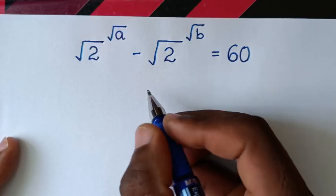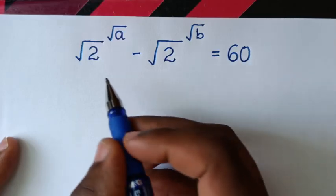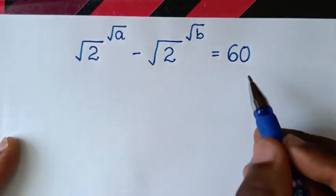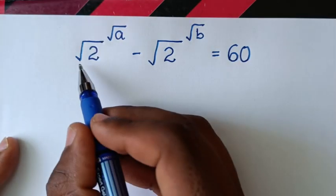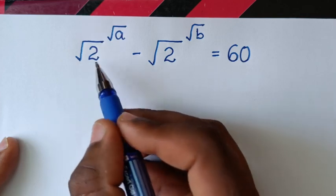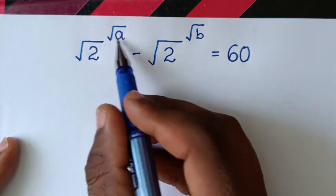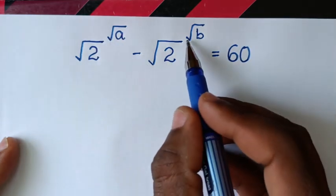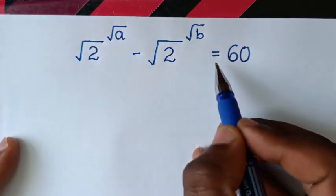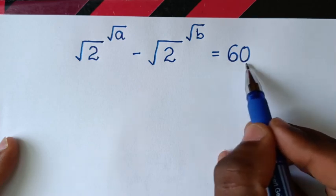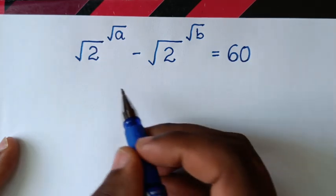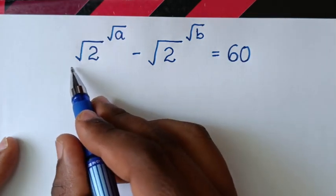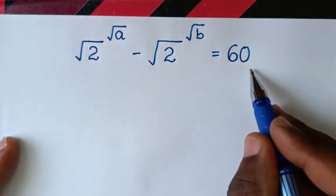Hello, you are welcome to solve this math problem, which is: square root of 2 to the power of square root of a, minus square root of 2 to the power of square root of b, is equal to 60. We need to find the values of a and b from this equation.